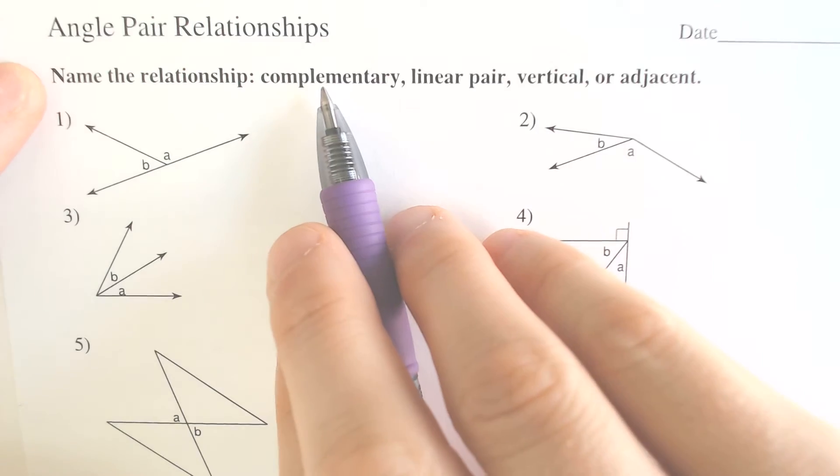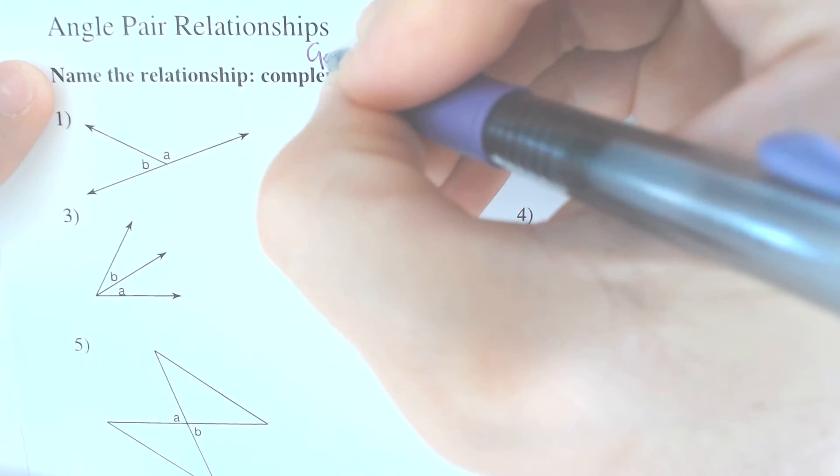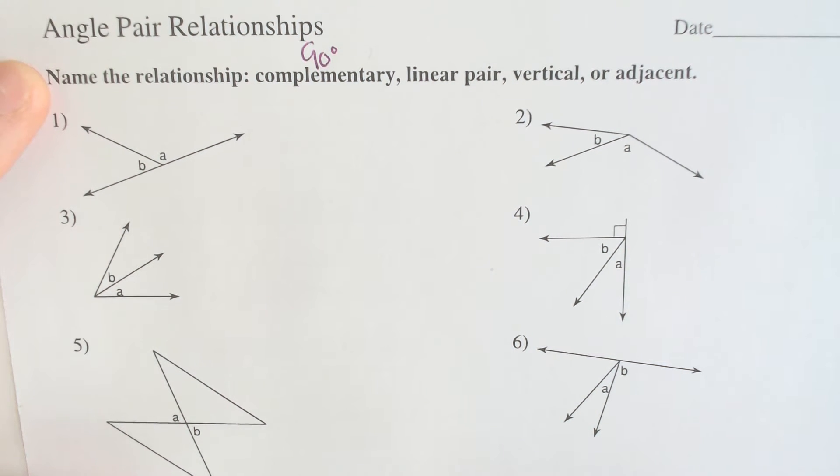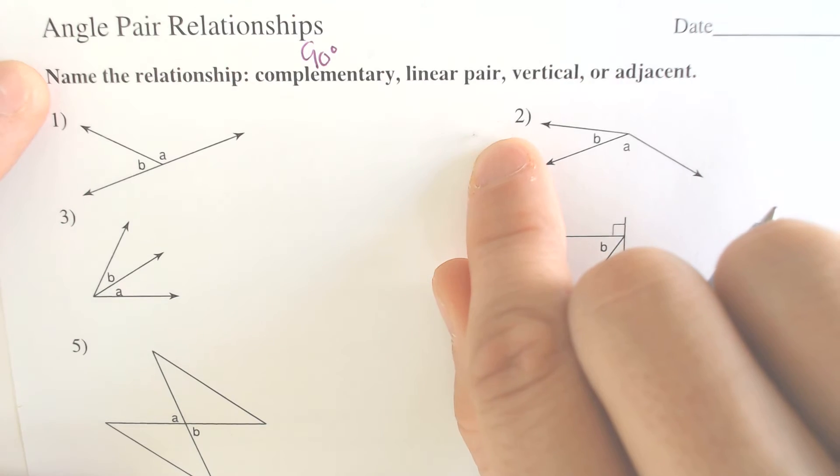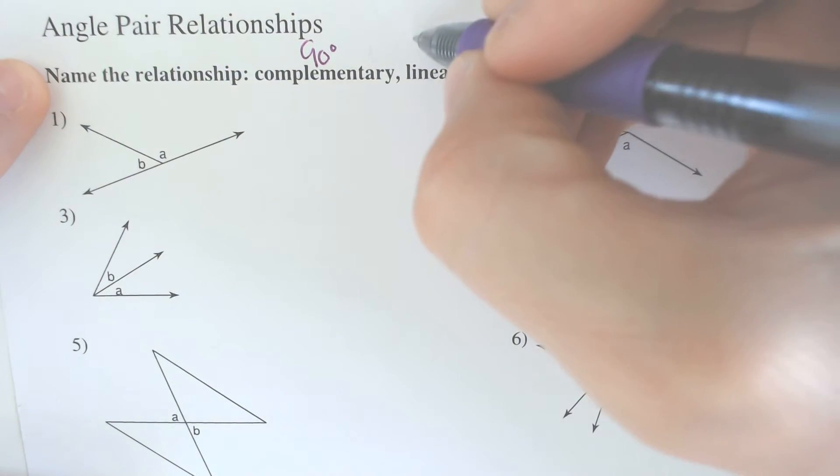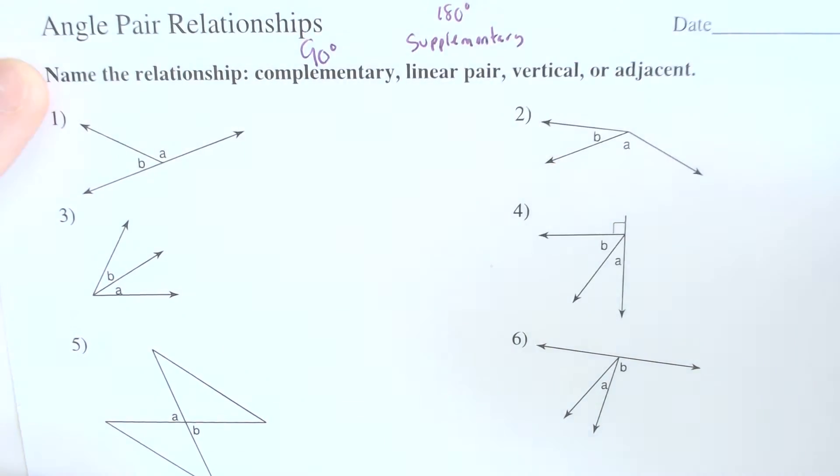So the first thing we have to do is identify what is the meaning of complementary angles. The meaning of a complementary angle is it is a right angle or adds to 90 degrees. Whereas a linear pair, by the definition of it, is a line and would be considered supplementary, which means it adds to 180 degrees.